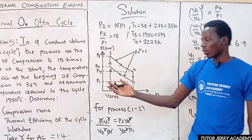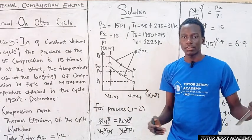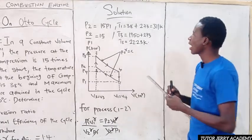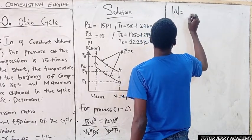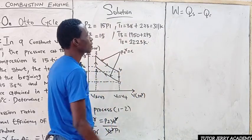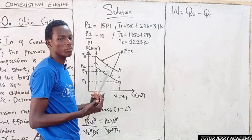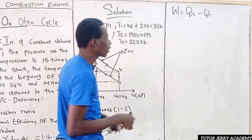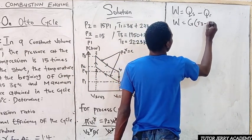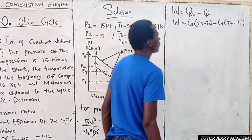Next, we find the work done. Work done equals heat supplied minus heat rejected. Specifically, W = C_V(T3 − T2) − C_V(T4 − T1). We have T1 and T3 from the question, but we still need T2 and T4.